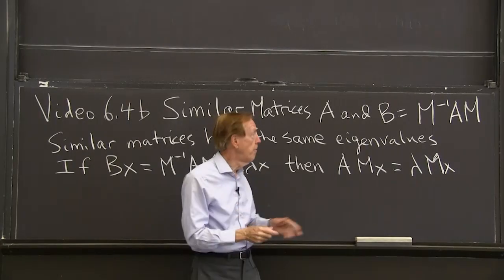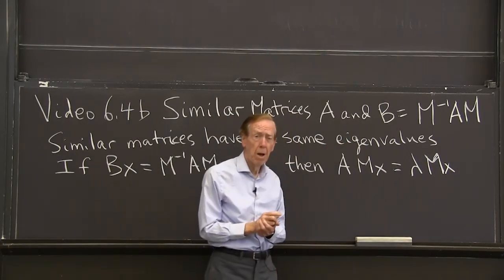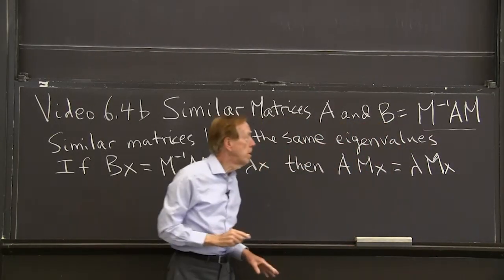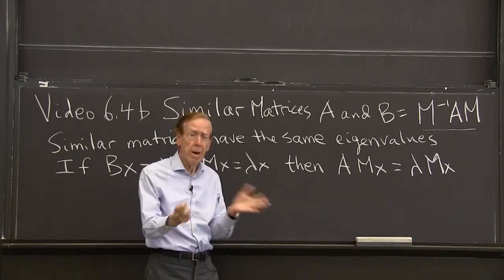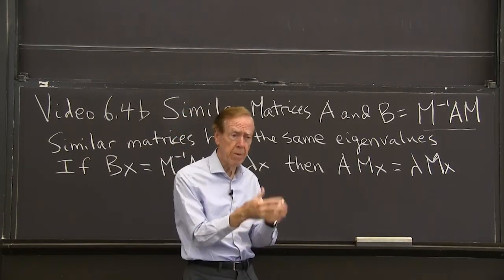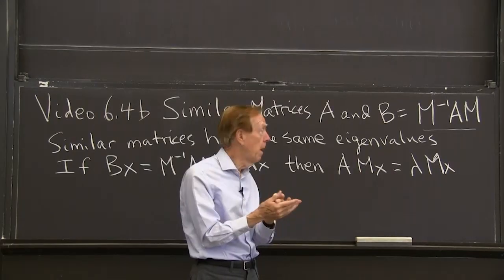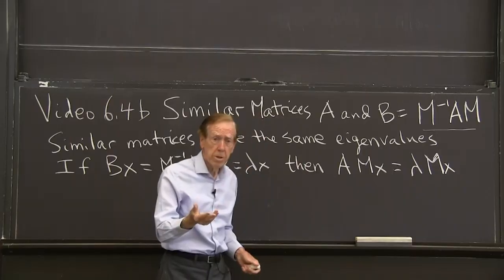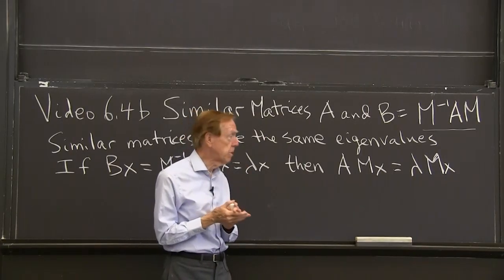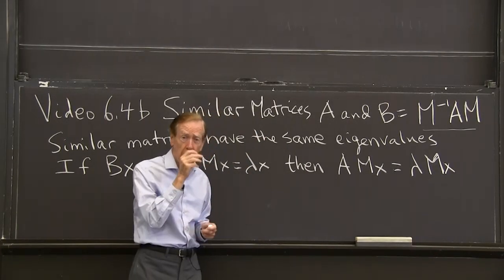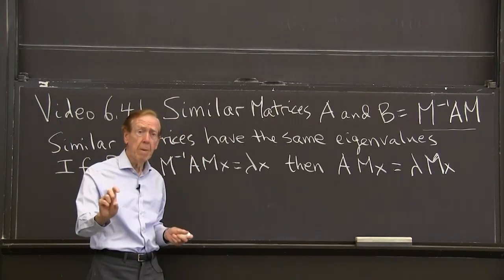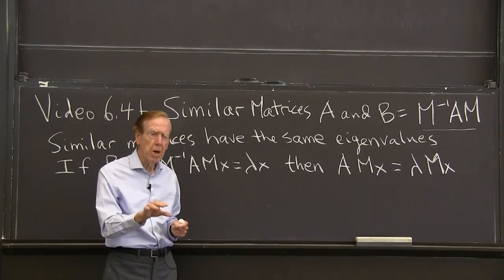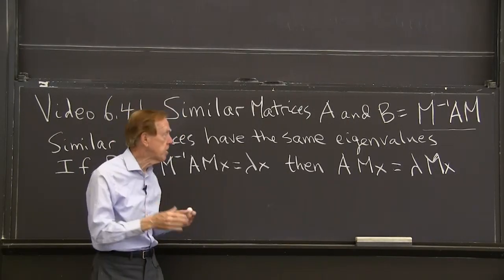I'll show you examples of matrices that are similar. But the first is to get this definition in mind. So in general, a lot of matrices are similar to if I have a certain matrix A, I can take any M, and I'll get a similar matrix B. So there are lots of similar matrices. And the point is, all those similar matrices have the same eigenvalues. So there's a little family of matrices there, all similar to each other, and all with the same eigenvalues.